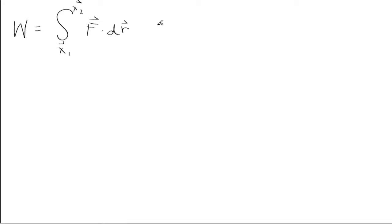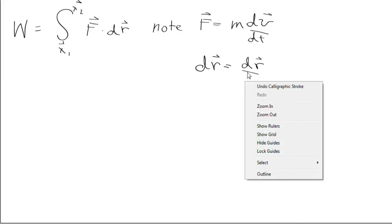Now, note that F can be written as m times the derivative of velocity with respect to time by momentum principle, and also by chain rule, we can write that dr is equal to dr dt times dt.